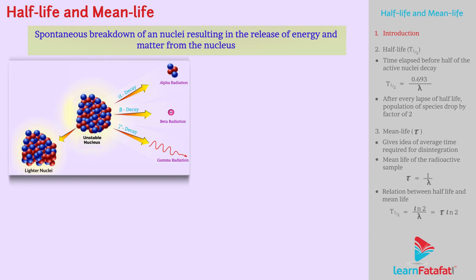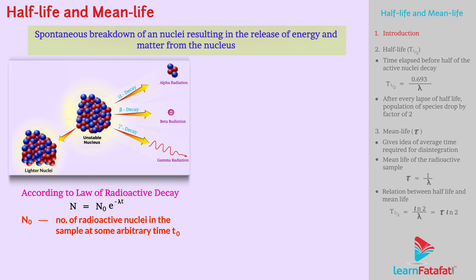Also, according to law of radioactive decay, N = N₀e^(-λt), where N₀ is the number of radioactive nuclei in the sample at some arbitrary time t₀, and N is the number of radioactive nuclei at any subsequent time t. Lambda is the decay constant.